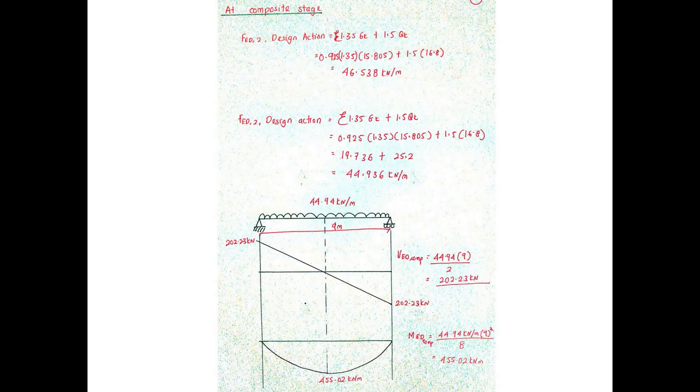Meanwhile, at the composite stage, from the calculation earlier, the design load is 44.94 kN/m. Meanwhile, maximum design moment and shear forces are 455.02 kNm and 202.23 kN respectively.